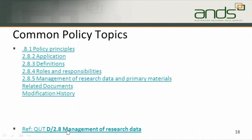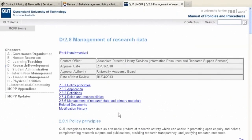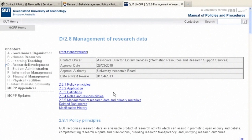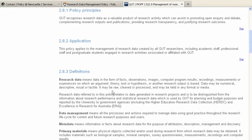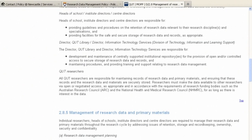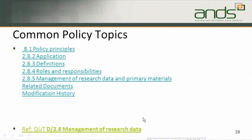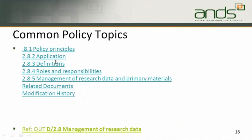Common policy topics — these are like the index to the policy. When you start your policy you've got to have a look at it. Some policies will have ten of these; this is quite short and concise. As you can see by the D reference, it relates to research and development. It's got policy principles, application, definitions, roles and responsibilities, and it goes on to say who's doing what with what. So if you're starting your policy you'd start with policy principles, applications, and you could think through those topics — what do I know about this, how do I think it should operate within my university, what would fit with the other structures and policies currently in place?